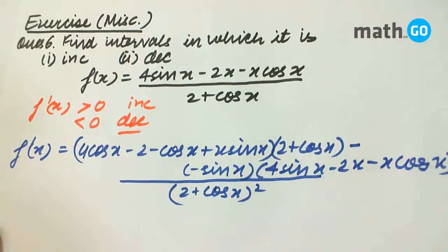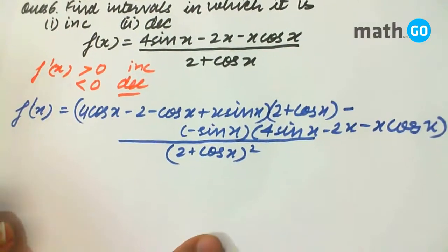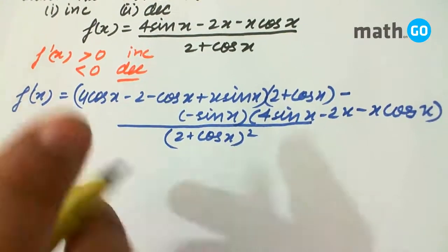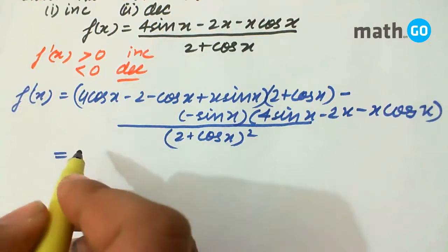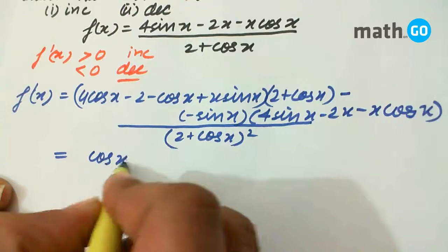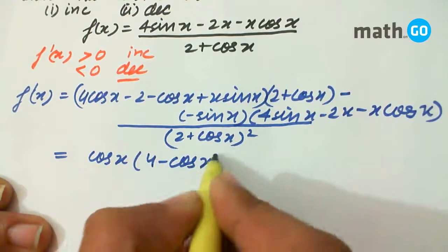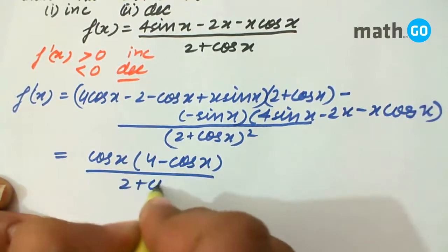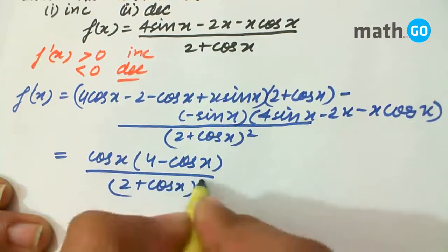So on solving, it's simple addition and subtraction, which on solving we get cos x into 4 minus cos x upon 2 plus cos x whole square.